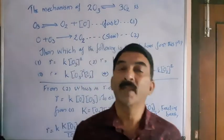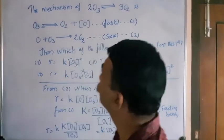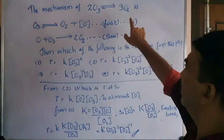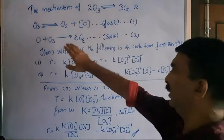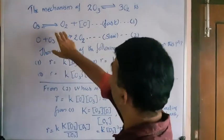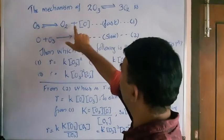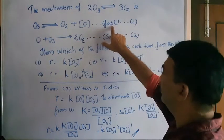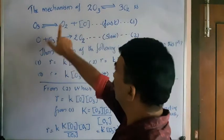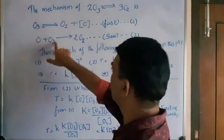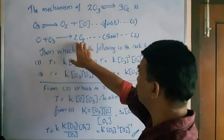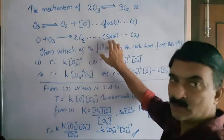Okay, let's read the question. The mechanism of 2O3 reversibly giving 3O2 is given as O3 reversible arrow O2 plus nascent oxygen atom. This is the first step, followed by the O thus formed plus O3 giving 2O2. So one O2 is formed here, the other O2 is formed here. The second one is the slow step.